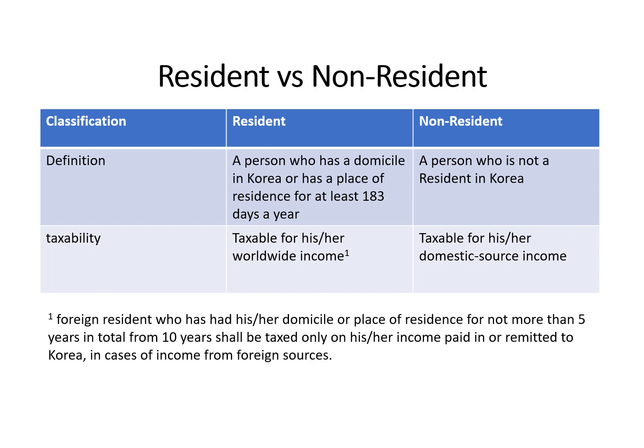Resident vs. Non-Resident — this is a very important concept in tax law. First, the definition: a resident is a person who has a domicile in Korea or has a place of residence for at least 183 days a year. A non-resident is a person who is not a resident in Korea. For tax liability, a resident is taxable on his or her worldwide income, while a non-resident is taxable only on his or her domestic source income.